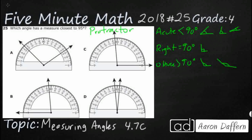So we're dealing with 95 degrees. 95 is greater than 90, so it's going to be obtuse. But 90 is pretty close to 95, so I'm thinking it's going to be something that looks just a little bit above 90 — not anything really large.